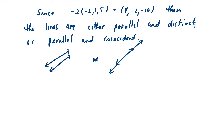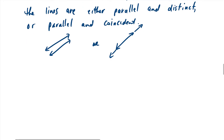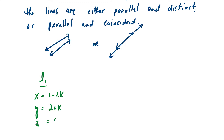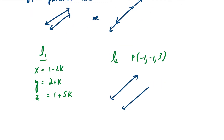How do we prove whether they're parallel and distinct, or parallel and coincident? One method: write one equation in parametric form — x equals 1 minus 2k, y equals 2 plus k, z equals 1 plus 5k. Then take the point on line two, which is (−1, −1, 3). If this point also lies on line one, the lines must be the same line. If a point from line two is also on line one and both lines are parallel, then they must be the same line.